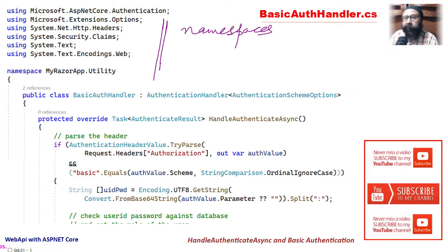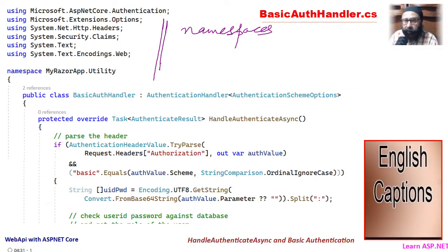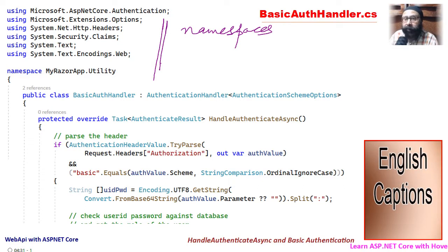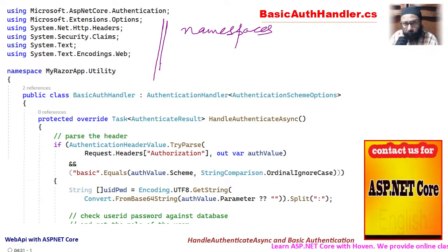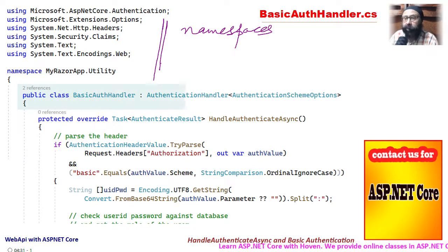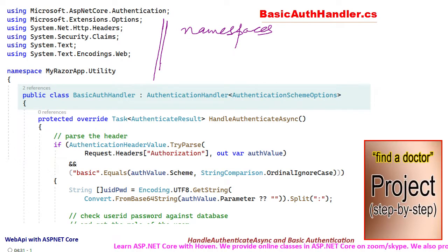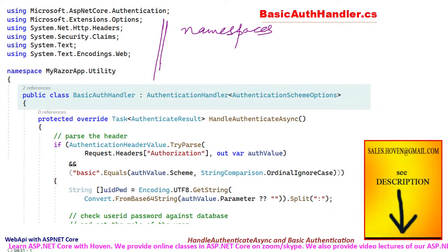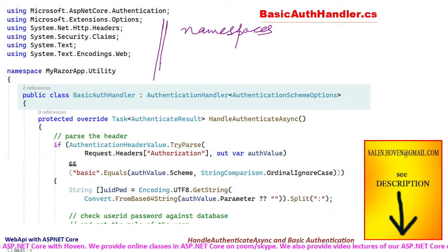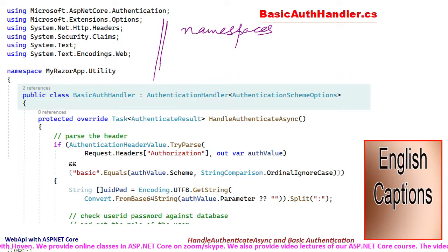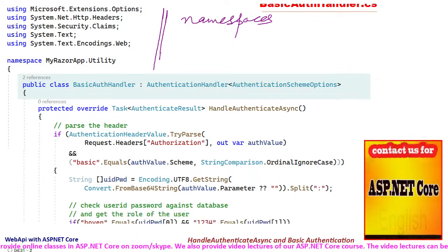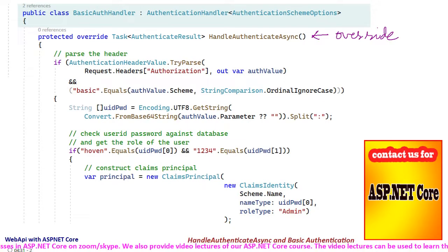At the start we have the various namespace directives. You can always have a look at them if you get compilation errors when you write your own code. The class BasicAuthHandler has been derived from AuthenticationHandler. This class contains most of the boilerplate code, so the only thing that needs to be done now is override the handleAuthenticateAsync function, as you are seeing here.